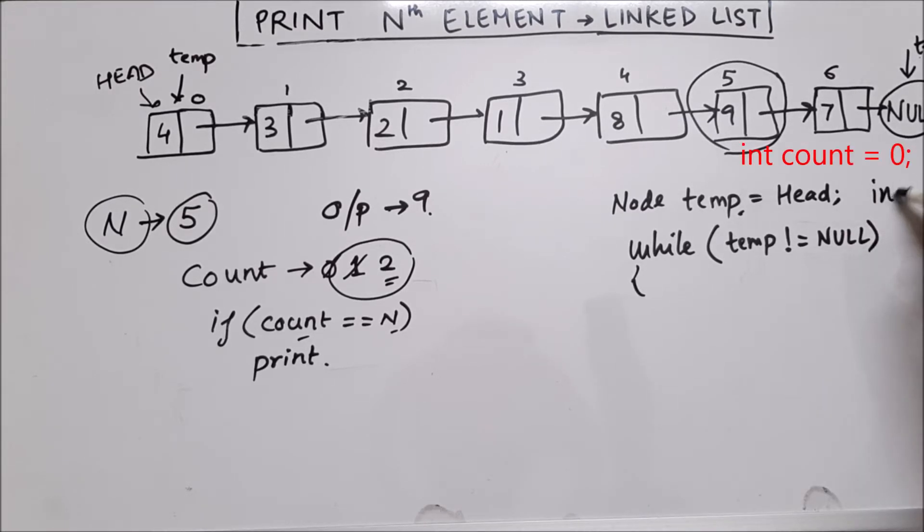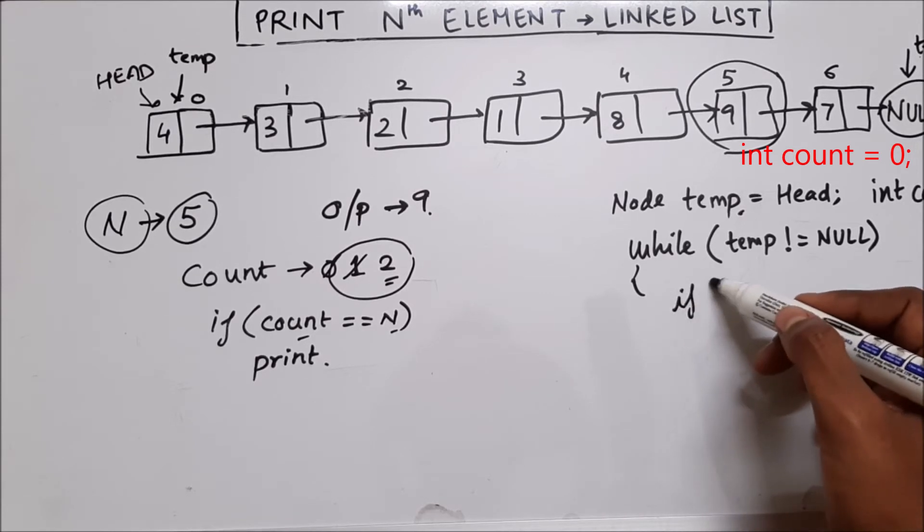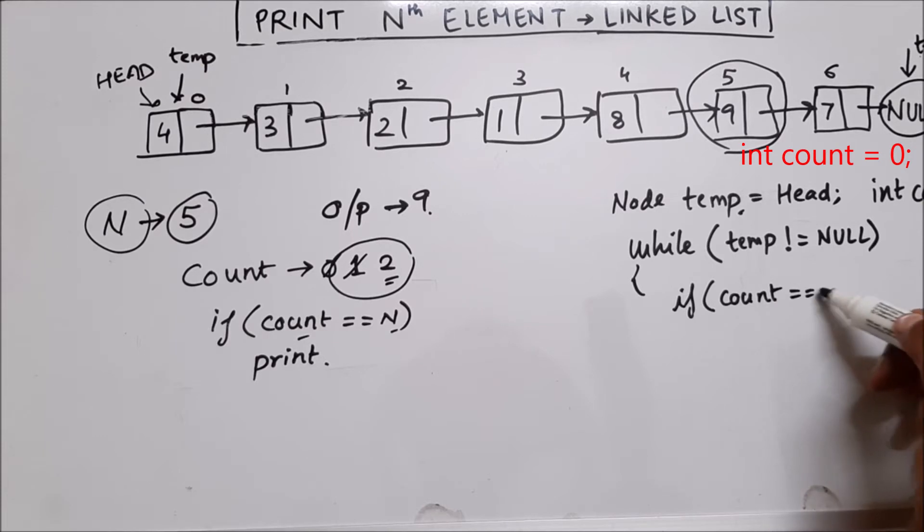So before traversing, we need a count variable to keep track of the node which we are traveling. So initially count is zero, which means that we are at the zeroth node. So first thing inside the loop, what we will do is we will check if count is equal to n.